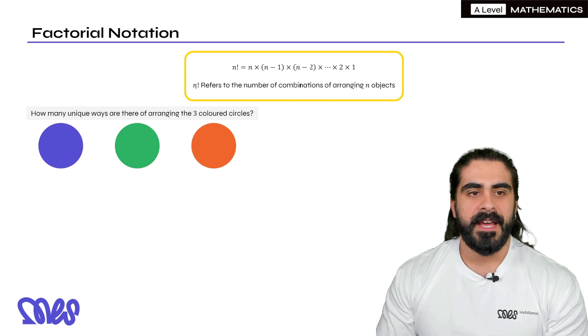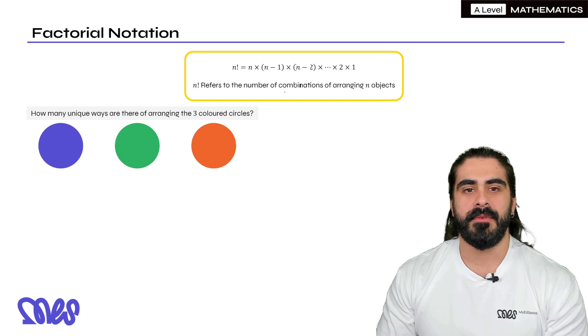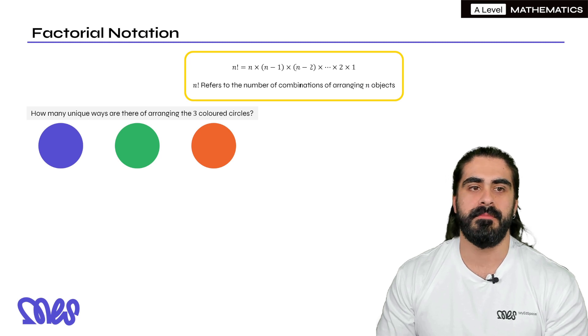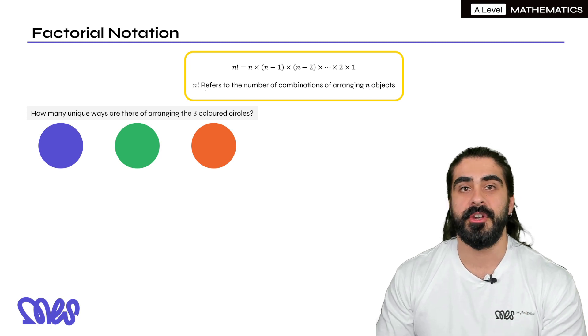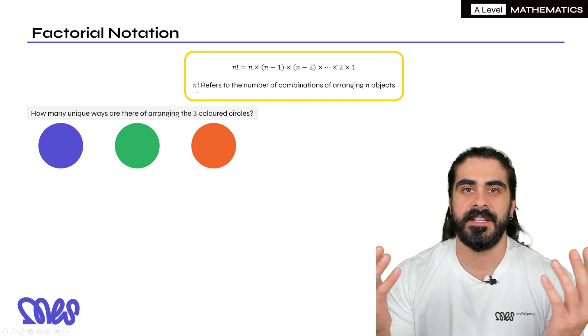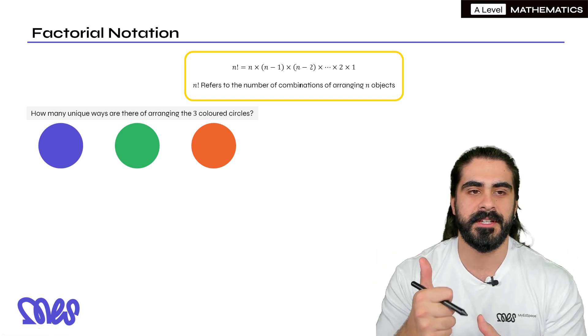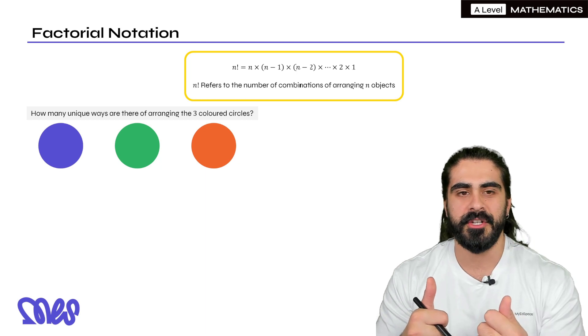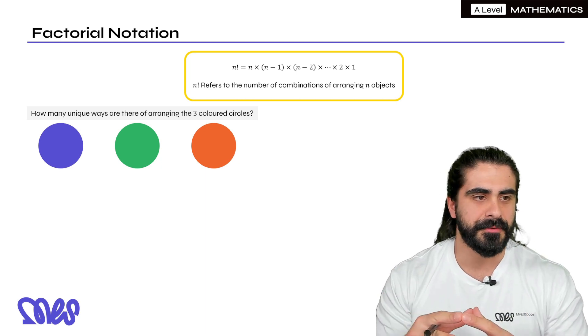Now in statistics, n factorial refers to the number of combinations of arranging n objects, and we particularly like to use this in the binomial distribution. So anyone who's done a bit of statistics can see the link in the name, the binomial distribution in statistics, and the binomial expansion in pure maths.